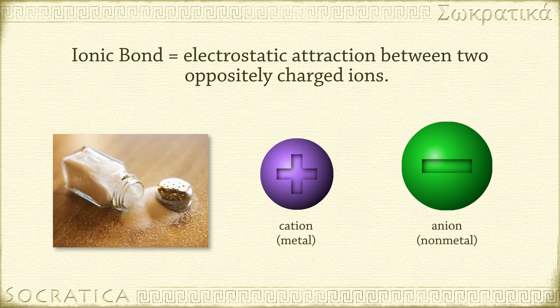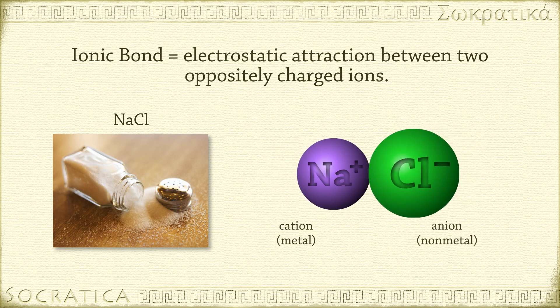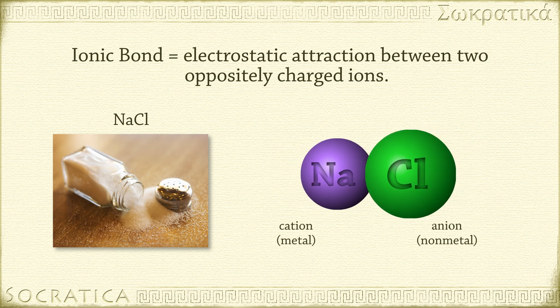A familiar example is the bond forming table salt, NaCl. Sodium ions, Na+, are strongly attracted to chloride ions, Cl-. When they are joined together by an ionic bond, their opposite charges cancel, and they form a compound that is electrically neutral. Remember this when you write the formula for any ionic compound: the total positive charges of the cations have to equal the total negative charges of the anions to form a neutral ionic compound.